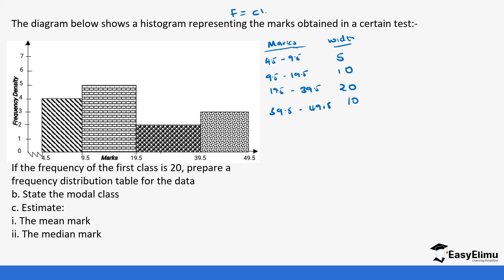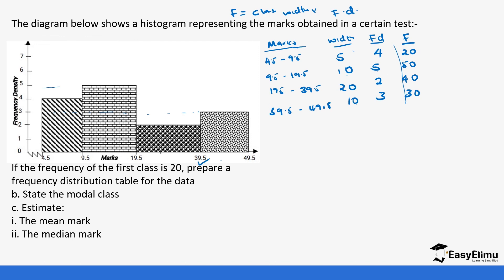To get the frequency we multiply class width times frequency density. Reading from the histogram: between 4.5 and 9.5 the frequency density is 4, between 9.5 and 19.5 it is 5, between 19.5 and 39.5 it is 2, and between 39.5 and 49.5 it is 3. So the frequencies are: 5 times 4 equals 20, 10 times 5 equals 50, 20 times 2 equals 40, and 10 times 3 equals 30. The first class has a frequency of 20, which matches the question.